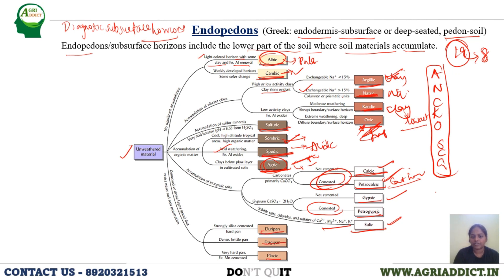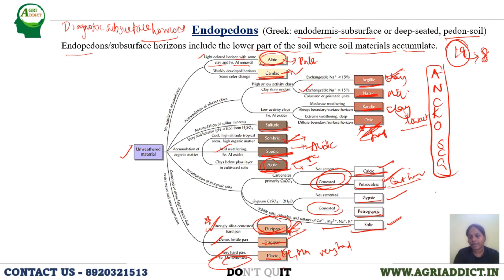Duripan is a strongly silica-cemented hardpan — very important from a JRF exam point of view. Fragipan is a brittle kind of endopedon. Placic endopedon is very hard, cemented by iron and manganese — placic is usually harder compared to duripan, which is hard but comparatively lesser than placic. These are the important epipedons and endopedons in soil classification.